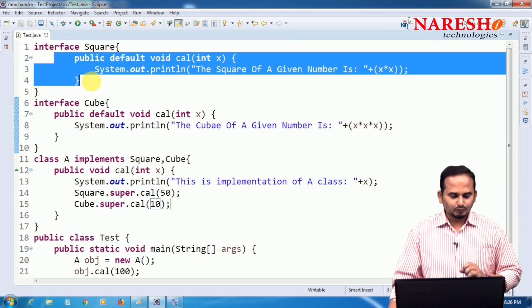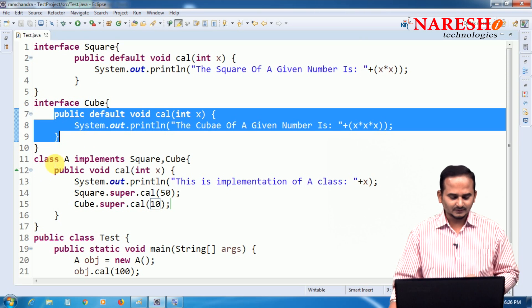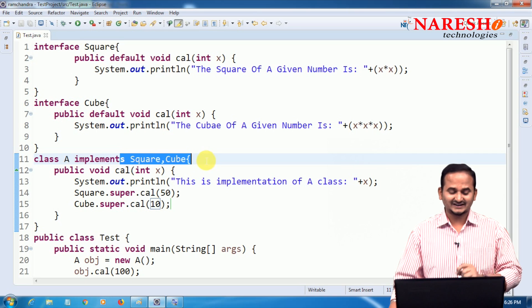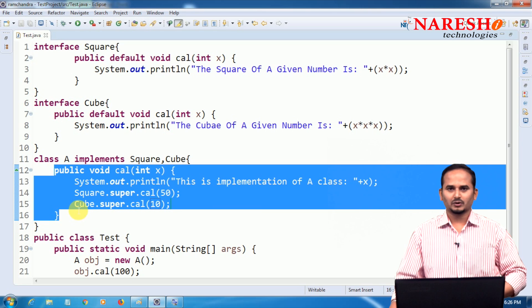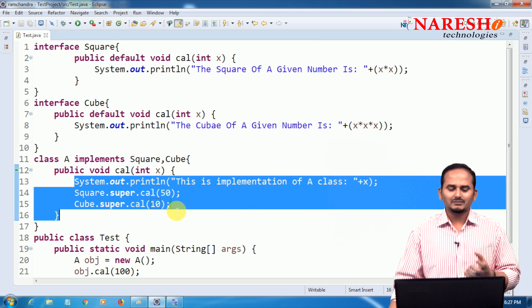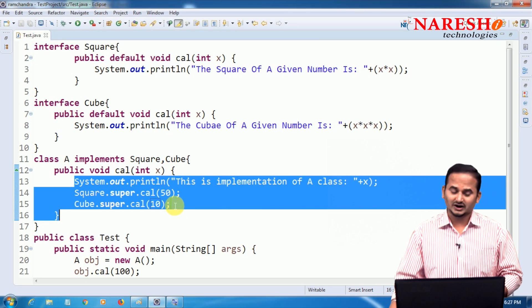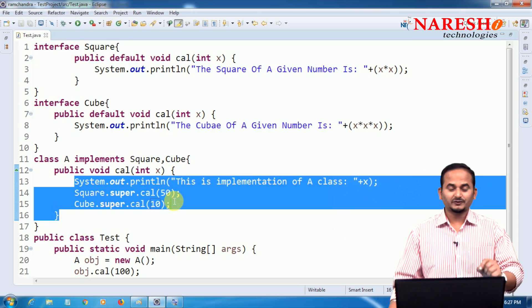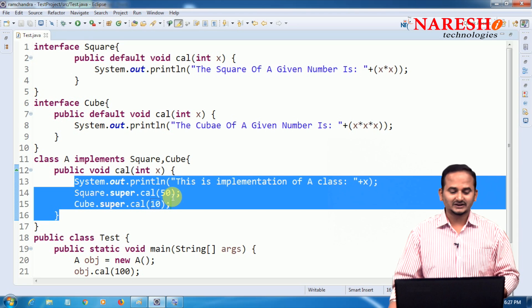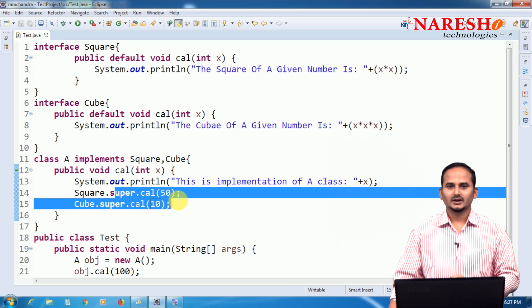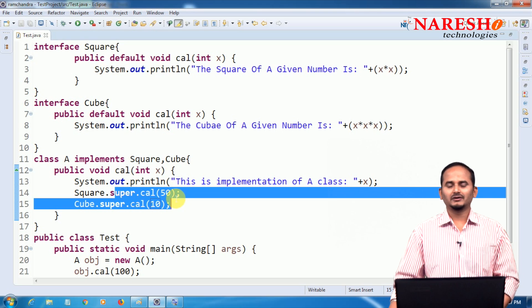So if both the interfaces have the same default methods and if your class implements both the interfaces by using multiple inheritance concept, definitely we are going to face some ambiguity problem by compiler. To avoid that problem, we should override cal method. And if you are overriding only cal method, cal method will execute, but we can't access square interface default method as well as cube interface default method. If you want to access them, we should call again by using square.super.cal as well as cube.super.cal.